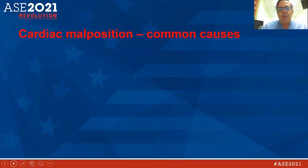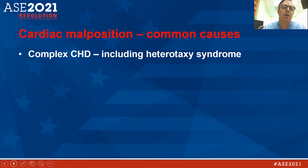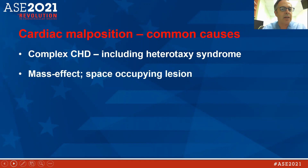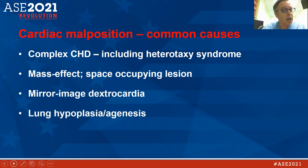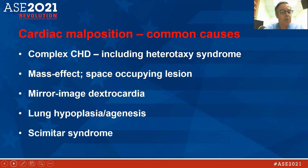When we talk about cardiac malposition, we're talking about the heart not residing in the normal place — the left side of the chest with the apex pointed to the left. There are several different causes for that, the most common of which is complex congenital heart disease, including heterotaxy syndrome. Also mass effect, when something like a tumor is shifting the heart to the right, occupying the left chest. Mirror image dextrocardia is another reason, as well as right lung hypoplasia or agenesis, and scimitar syndrome will also cause the heart to shift to the right.